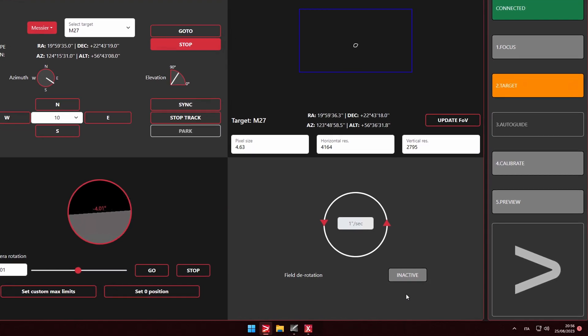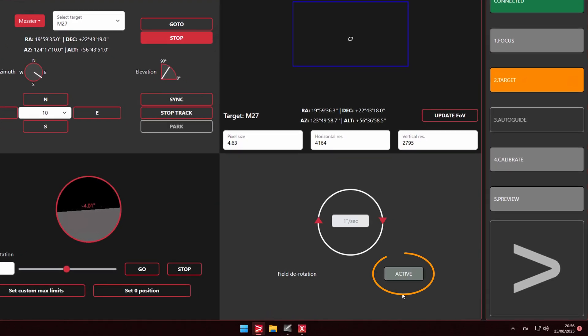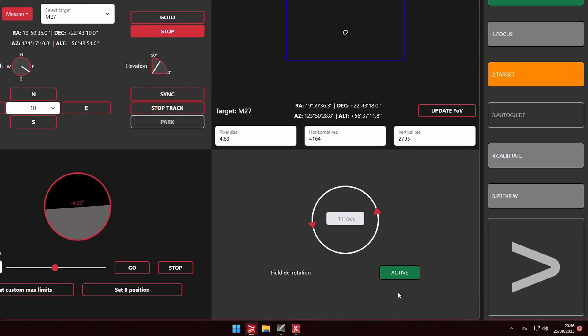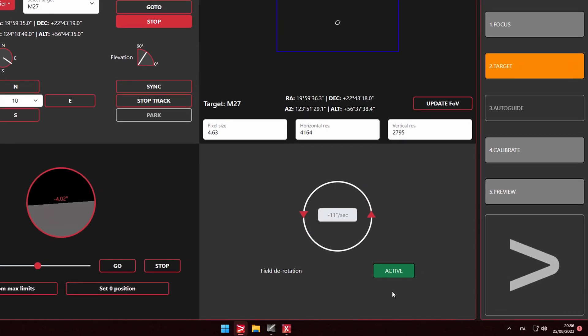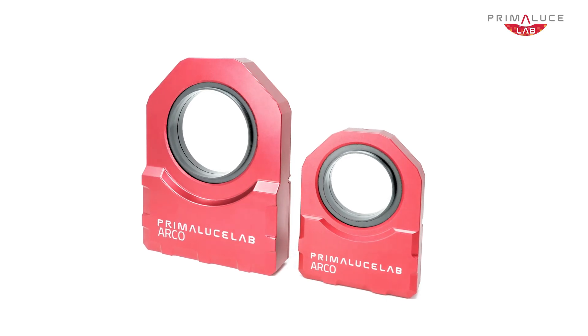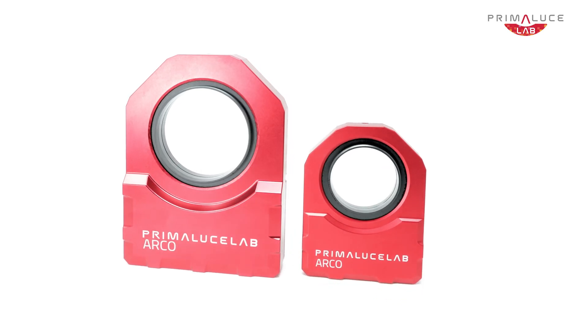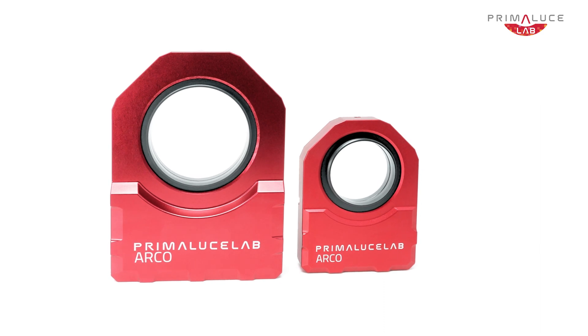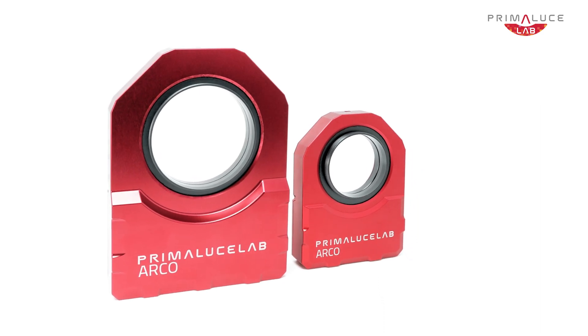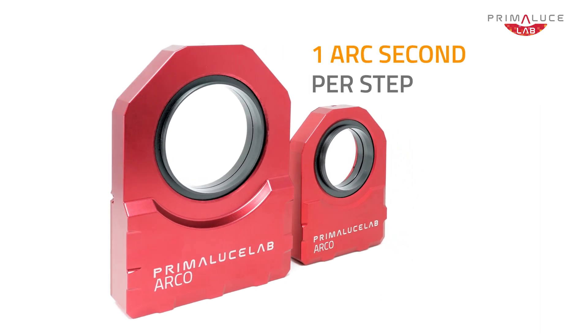When the mount reaches target, Play automatically derotates field of view and I can record a long exposure astrophotography without the worry of field rotation. This is possible also because ARCO is not a simple rotator, but a high resolution field rotator with an incredible resolution of one arc second per step.